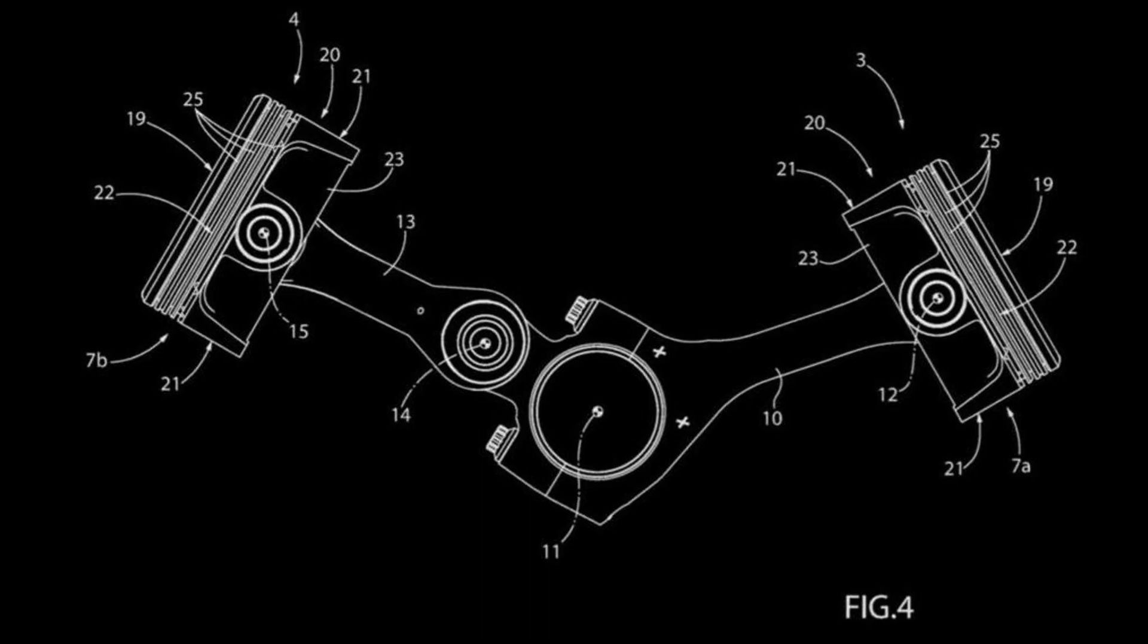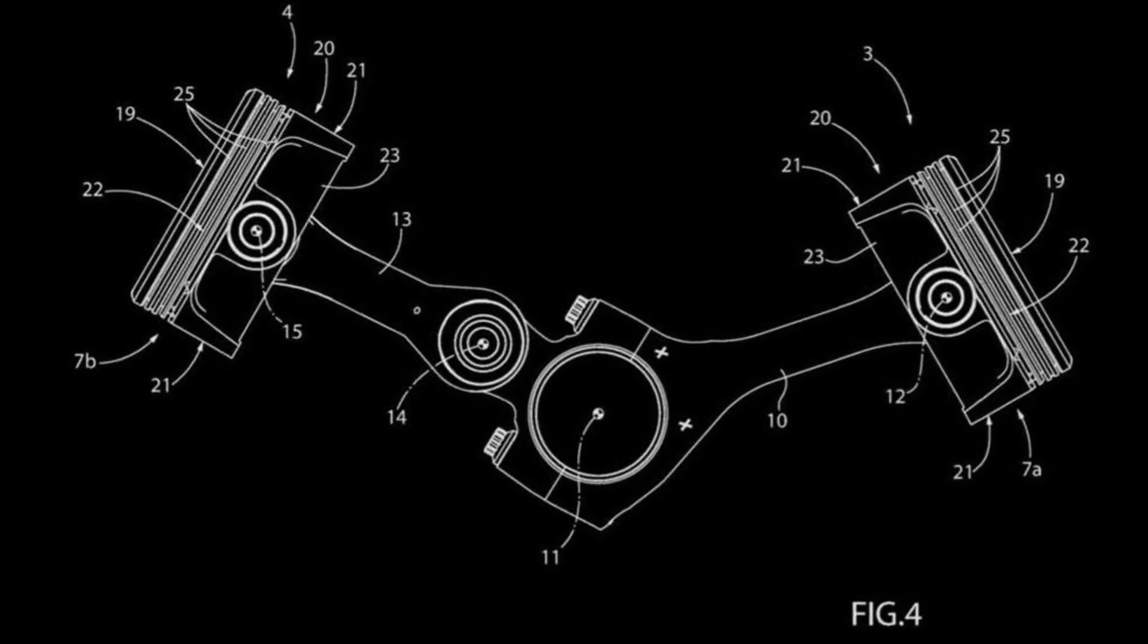But coupled connecting rods aren't a new solution. For instance, the Soviet V2 tank engine from the 30s used coupled rods. This engine also featured a V12 configuration, direct injection, and an aluminum block. It was installed in the T-34 tank.